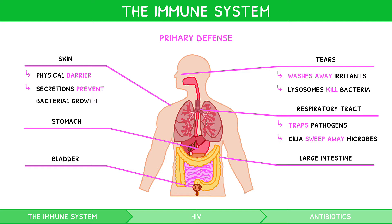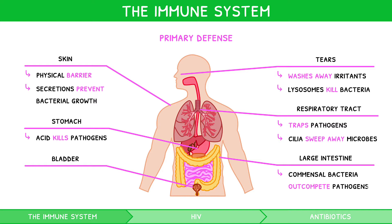The stomach contains hydrochloric acid, which kills pathogens. The large intestine contains native bacteria, i.e. commensal bacteria, which outcompete pathogens for resources. And the bladder contains urea, which washes away microbes from the urethra.